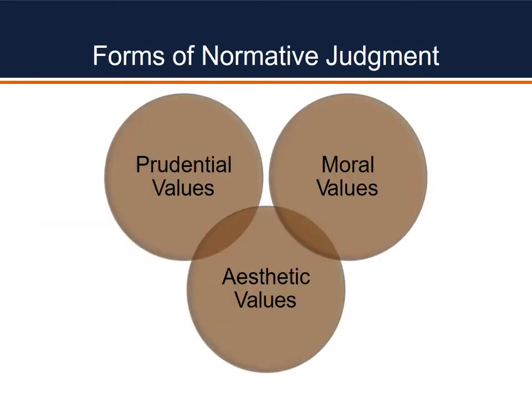How then might one judge normative issues? We're going to provide some framework for that. There are three ways that we can think about values that help us form these normative judgments. We're going to address three values: prudential, moral, and aesthetic. In the coming slides, we'll go through those in detail.